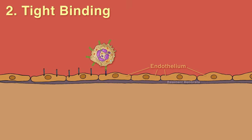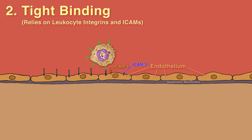Step 2: Tight binding. Tight binding relies on interactions between leukocyte integrins and adhesion molecules on the endothelium, such as ICAM-1, which can be induced on endothelial cells by TNF-alpha, and ICAM-2.